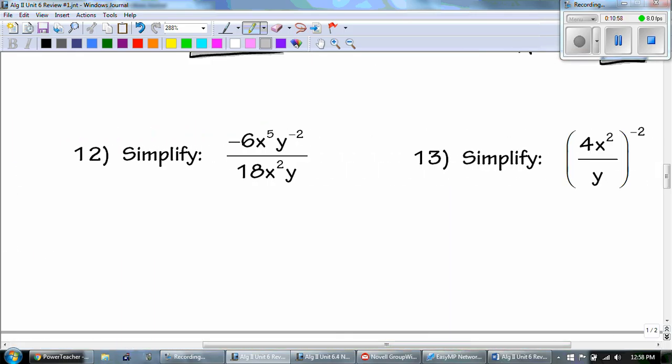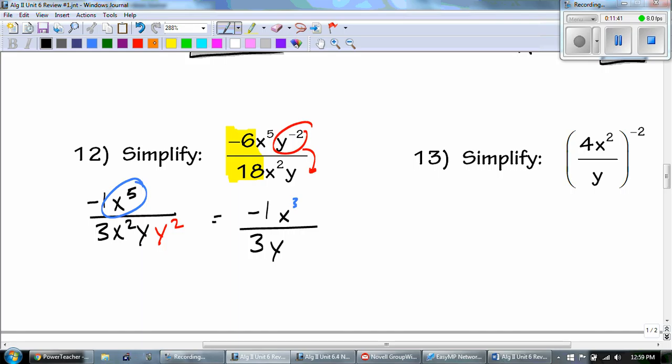Number 12. I always like to simplify my fractions first. So negative 6 over 18 is negative 1 over 3. My x to the fifth stays on top. My x squared stays on the bottom. My y stays on the bottom. But if my exponent's negative, I need to drop it like it's hot. And then I can decide who wins, the top or the bottom. And the top wins. The top wins by 3. And then the y's, I add up all my y's. And we have y cubed. So the only thing that you can get rid of would be the 1 out front. You don't have to have it, but if you keep it there, it's not wrong.